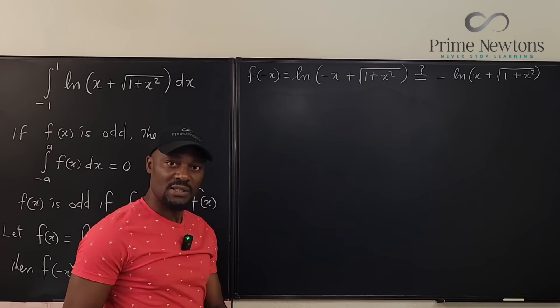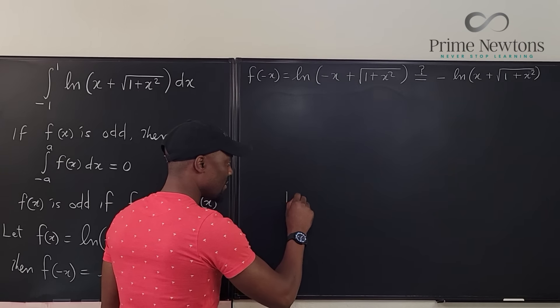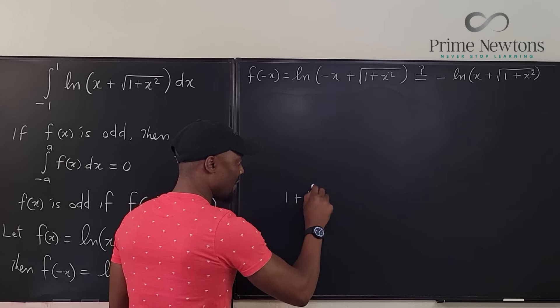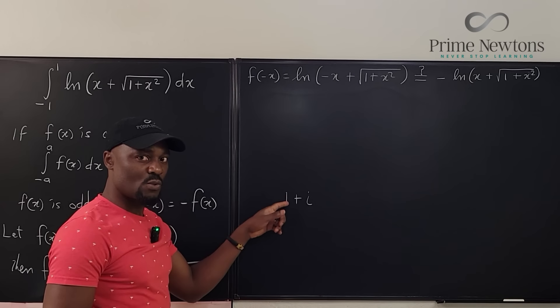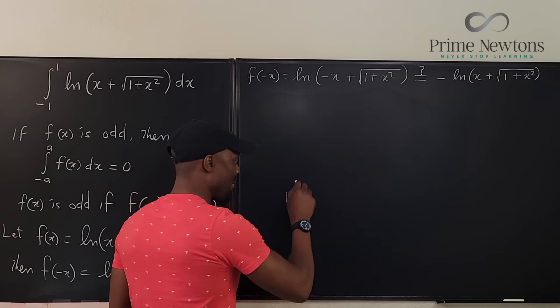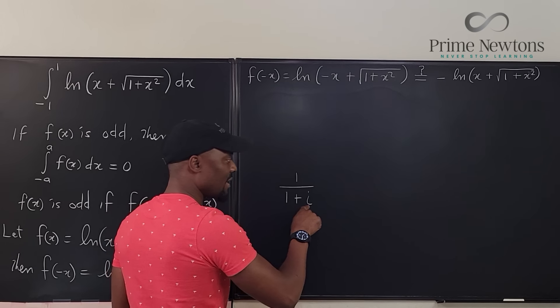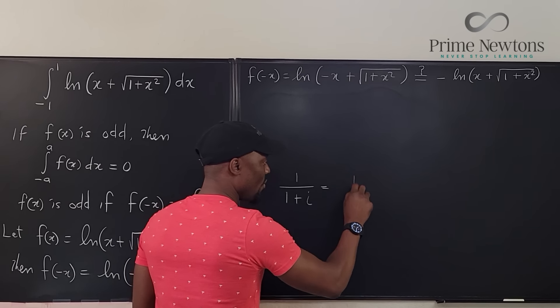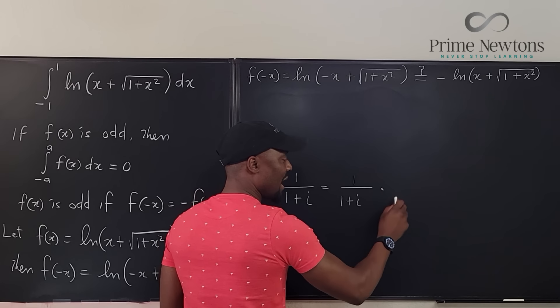So something I would like you to see. Let's use complex numbers. Look, 1 plus i. If you try to flip this 1 plus i, see what happens. The reciprocal of 1 plus i is equal to 1 over 1 plus i multiplied by, if you try to do the rationalization, it's going to be 1 minus i over 1 minus i.